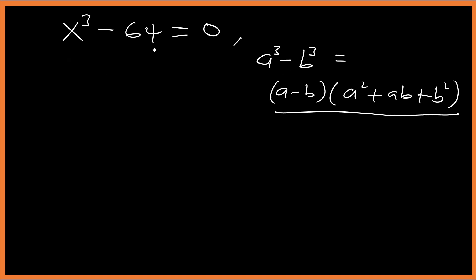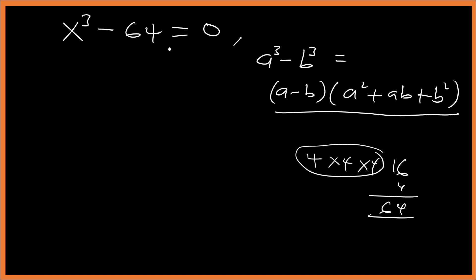We need to rewrite 64 as a perfect cube. We know 4 times 4 is 16, and 16 times 4 is 64, so 4 cubed equals 64. Therefore x cubed minus 64 becomes x cubed minus 4 cubed equals zero.